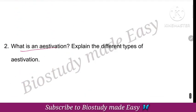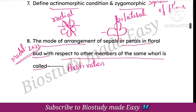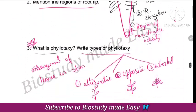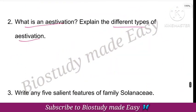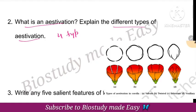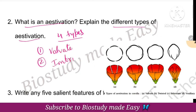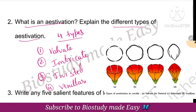Next question: what is aestivation and explain the different types of aestivation. Aestivation is the arrangement of sepals and petals in a floral bud. There are four types: valvate, imbricate, twisted, and vexillary aestivation. You can explain these with examples.